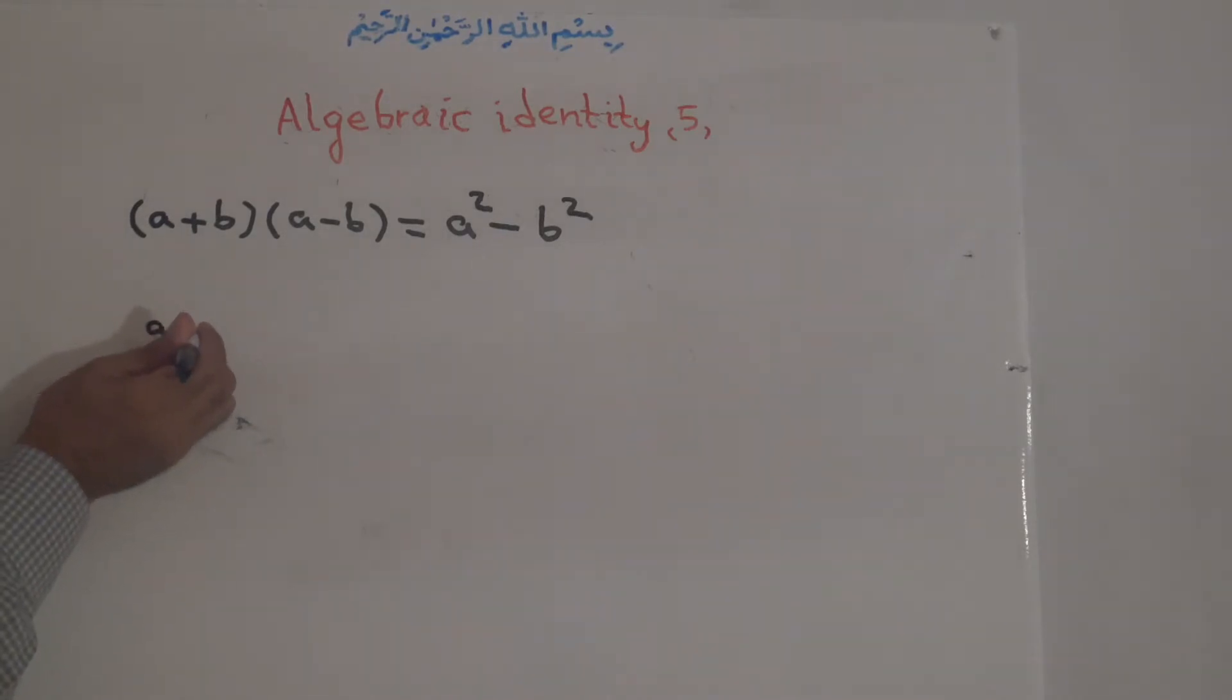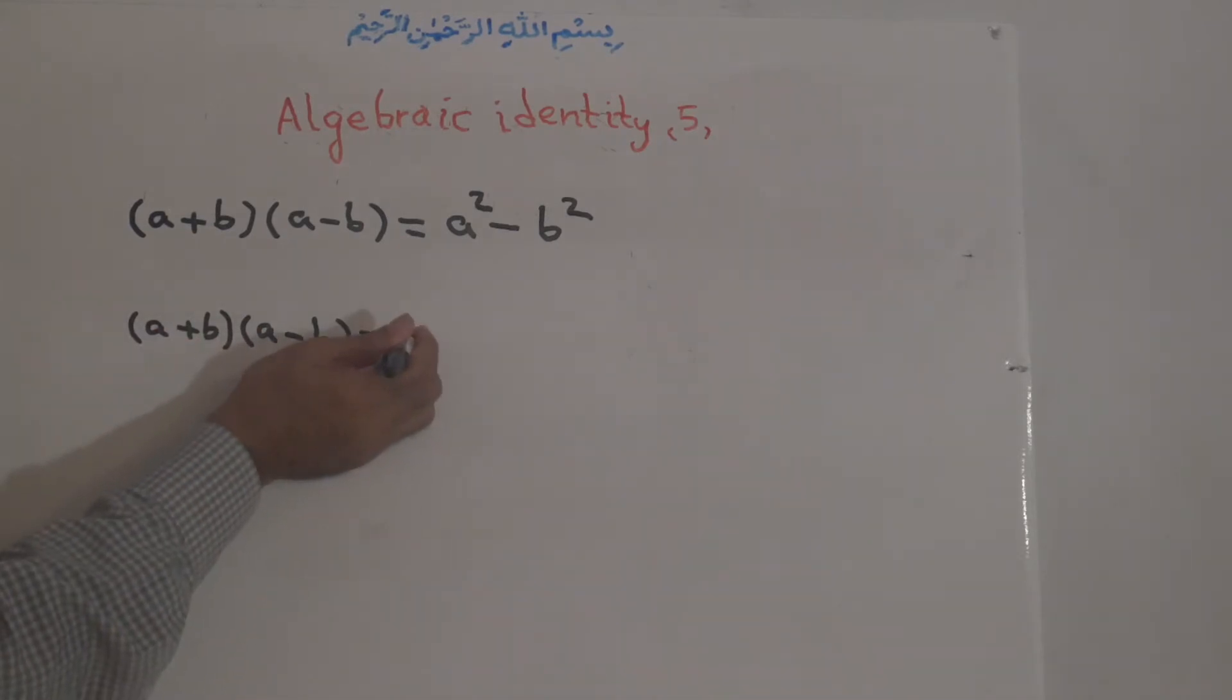And now we do this. A plus B multiplied by A minus B is equal to, we multiply the first term for both. A times A positive, times positive, A times A is equal to A to the power of 2.